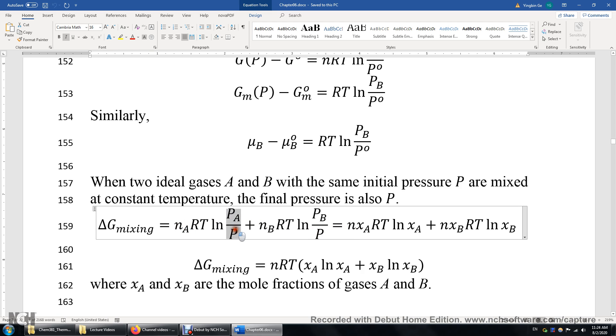PA over P, that's XA, mole fraction. And B is N times XB. XB is the mole fraction of B. And then PB over P, again that's the mole fraction of B in the gas mixture. And then we have this common factor N times R times T.